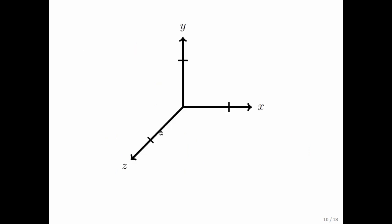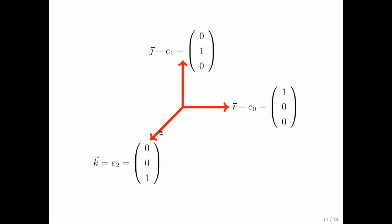If you visualize this, you may remember that in a standard coordinate system, you have these three vectors that lie along the x, y, and z axis. Well, those are vec i, or e sub zero as we call it, vec j, or e sub one as we call it, and vec k, or e sub two as we call it.